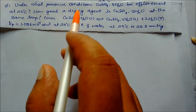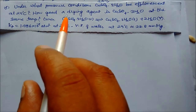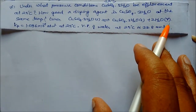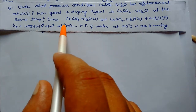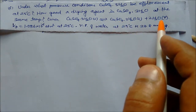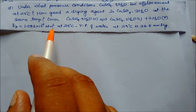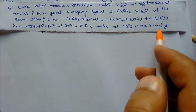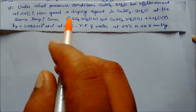Next problem: under what pressure conditions will CuSO4·5H2O be efflorescent at 25°C, and how good a drying agent is CuSO4·5H2O? The reaction is: CuSO4·5H2O (solid) ⇌ CuSO4·3H2O (solid) + 2H2O (gas), with Kp = 1.086 × 10⁻⁴ atm² at 25°C. The vapor pressure of water at 25°C is 23.8 mmHg.